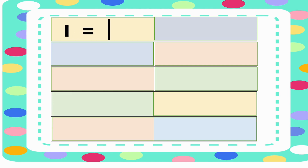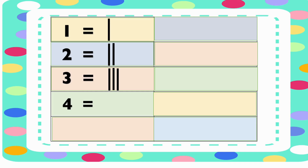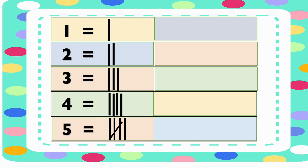Number one is represented by one straight line. Number two is represented by two straight lines. Number three is represented by three straight lines. Number four is represented by four straight lines. Number five is represented by four straight lines and one slant line. This makes one group — remember that tally marks are arranged in groups of five.